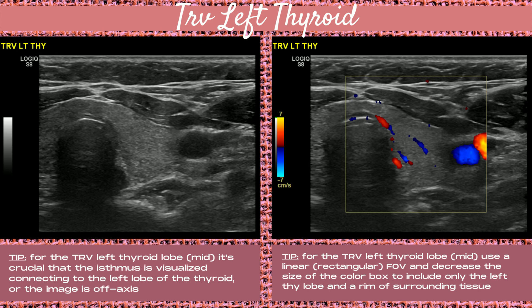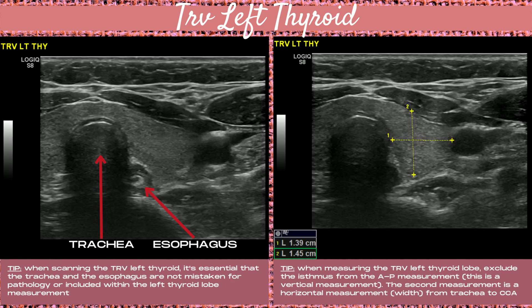Moving on to the transverse left thyroid lobe mid segment. It's crucial that the isthmus is visualized connecting to the left lobe or the image is off axis. Use a linear or rectangular shaped field of view and decrease the size of the color box to include only the left thyroid lobe and a rim of surrounding tissue. When scanning the transverse left thyroid, the trachea and esophagus must not be mistaken for pathology or included within the left thyroid lobe measurements. Exclude the isthmus from the AP measurement, and the width measurement can be measured from the tracheal border to the CCA border.